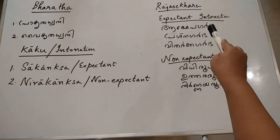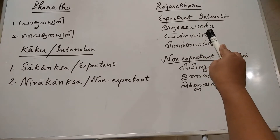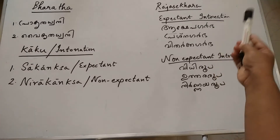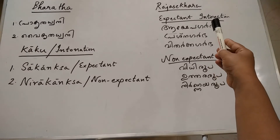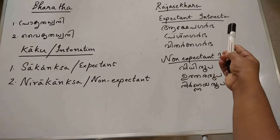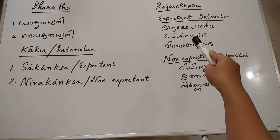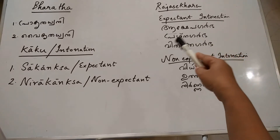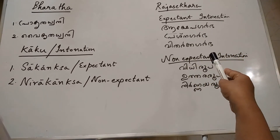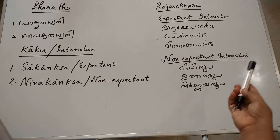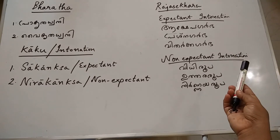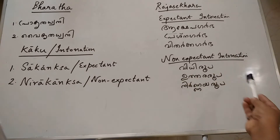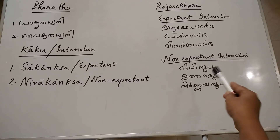So these three: Aakshhevagarbha is used when you are objecting, countering, or arguing against somebody, or disapproving something. Prashnagarbha is used when you are interrogating or questioning somebody. And Vidarkagarbha is used when you are skeptical or doubtful about something.